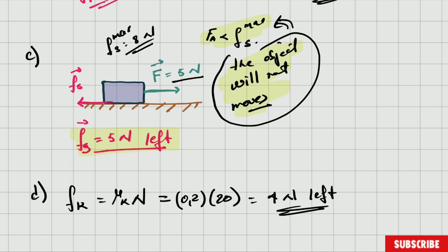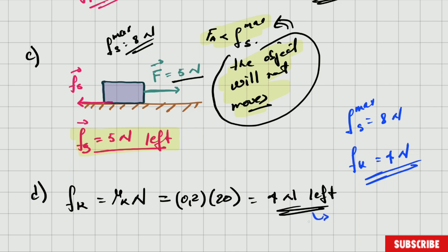The kinetic frictional force is 4 Newtons to the left — direction is important because we're dealing with vectors. Notice: the maximum static frictional force was 8 Newtons, but kinetic frictional force is only 4 Newtons. It will stay at 4 Newtons constantly, no matter how strong the applied force is or how fast the object moves. It only changes if the normal force or the surface changes.